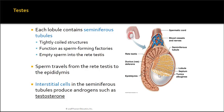Looking closer at the testes, we can see all these coiled structures referred to as the seminiferous tubules. These tightly coiled structures are where sperm is produced. When sperm is produced here, it drains into the rete testis — that network region — and from there goes into the epididymis.